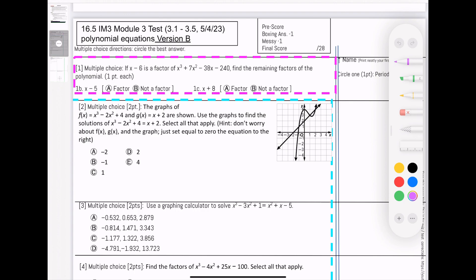Number one: if x minus 6 is a factor, note that when you know it's a factor, its remainder is zero. Find the remaining factors of the polynomial.